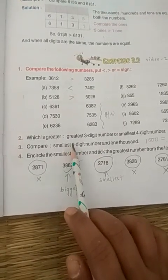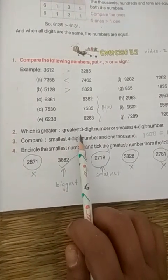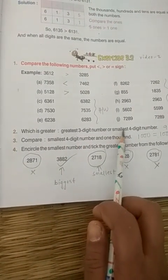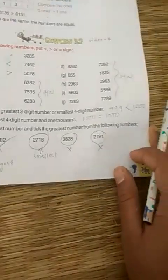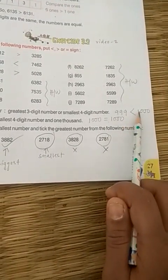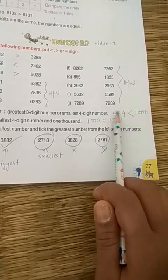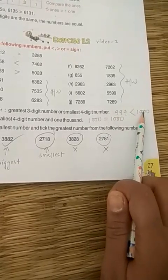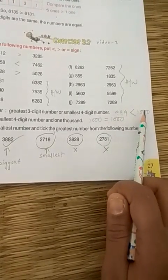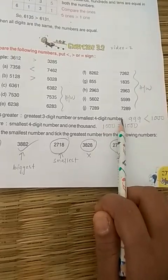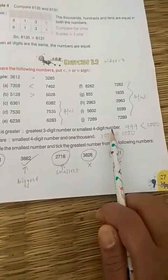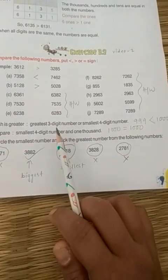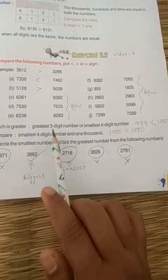Which is greater: the greatest 3-digit number, that is 999, or the smallest 4-digit number, that is 1000? We can see 1, 10, 100, and 1000. Comparing 100 and 1000, 1000 is greater. So the smallest 4-digit number, 1000, is greater than the greatest 3-digit number, 999.